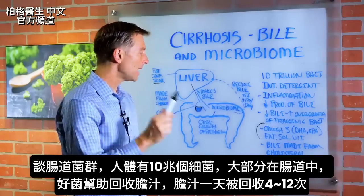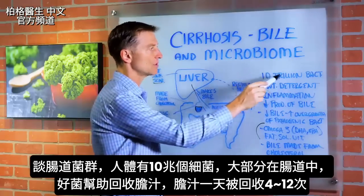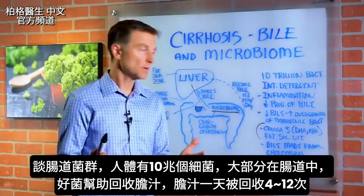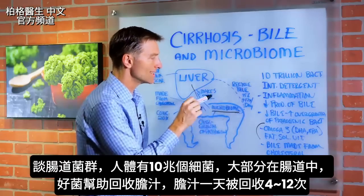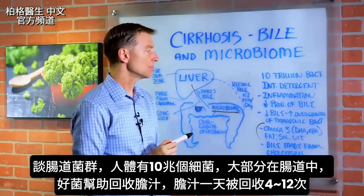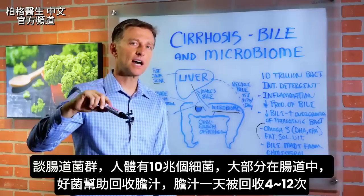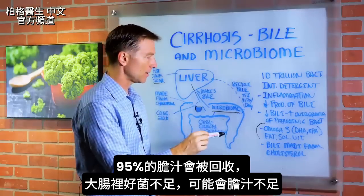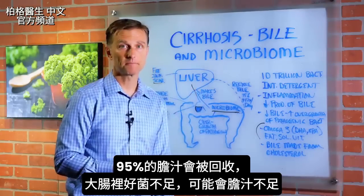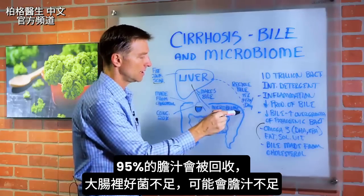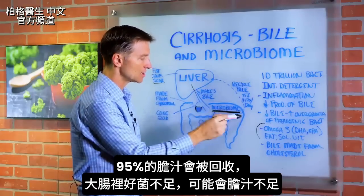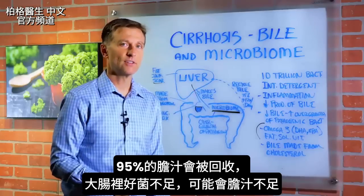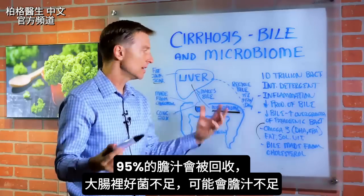But the microbiome — all the 10 trillion bacteria, a good portion of which are in the gut — help to recycle the bile. Your bile is recycled four to 12 times in a given day, and 95% of all the bile is recycled. So your body is very, very efficient. So if you don't have enough bacteria in your large intestine, that could be the reason why you don't have enough bile to be recycled and to have it work in the body.